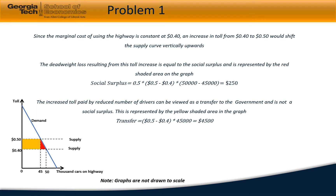In the first problem, the government wants to increase the toll from 40 cents to 50 cents. Since the marginal cost of using the highway is constant, an increase in toll would shift the supply curve vertically upwards. The deadweight loss resulting from this increase is represented by the red region on the graph and is equal to $250. The yellow shaded region is the increased revenue received from the reduced number of vehicles and is equal to $4,500. This is viewed as a transfer to the government and is not a surplus.